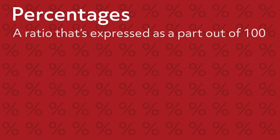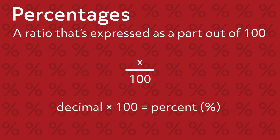A percentage is a ratio that is expressed as a part out of 100. When written as a fraction, its denominator is always 100. Numbers with decimals can be expressed as percents. To convert a decimal to a percentage, multiply the decimal by 100 and write the percent sign after the number.